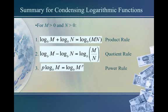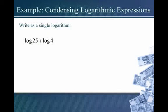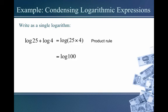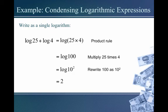Now let's go the other way and condense an expanded logarithmic expression. We have log of 25 plus log of 4. I see the addition of two logs, which means a product on the inside. So we get log of 25 times 4, which is log of 100. Can we simplify log base ten of 100? Yes — because 100 is 10 squared, log base ten of 10 cancel, and we simply get 2.